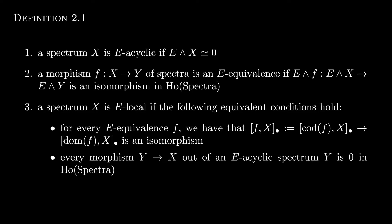we come to the definition of an E-equivalence. So a morphism f from X to Y of spectra is an E-equivalence if the induced map from E smash X to E smash Y is an isomorphism. Again, this is kind of like saying that if f is an isomorphism, kind of like saying that f is an isomorphism from the perspective of E.